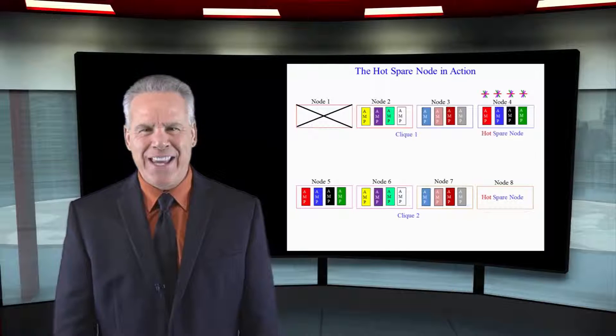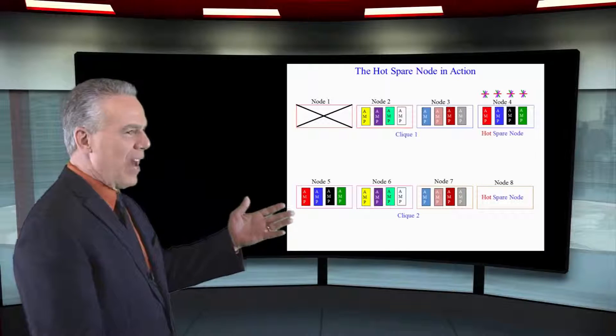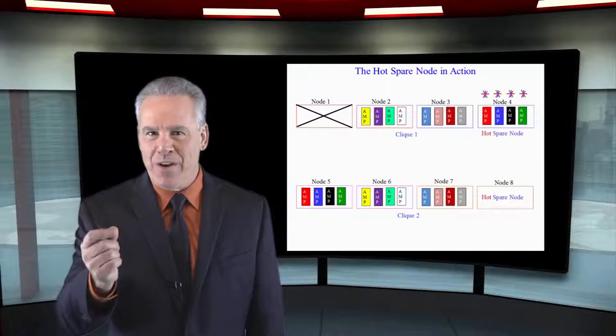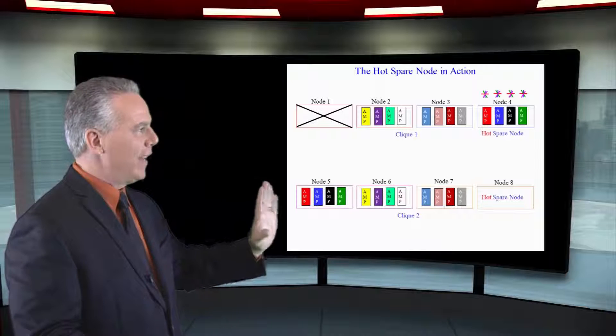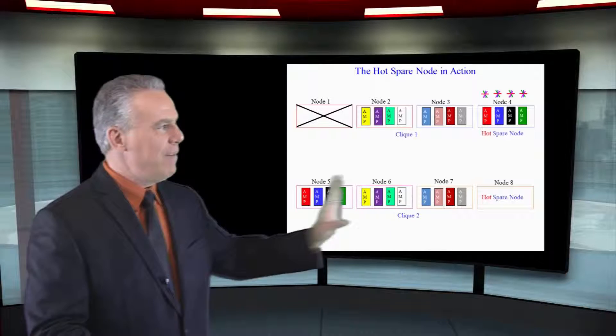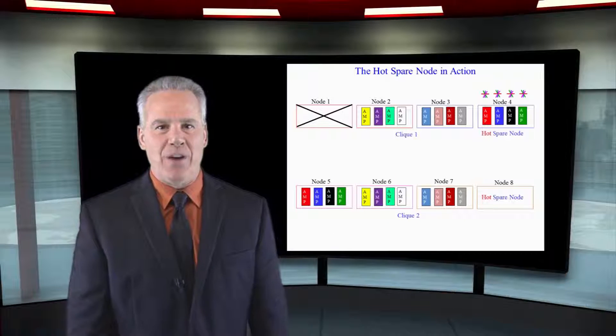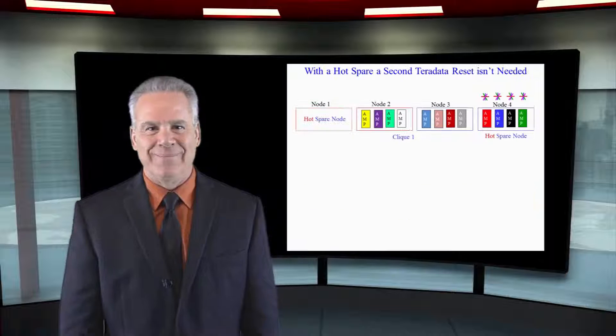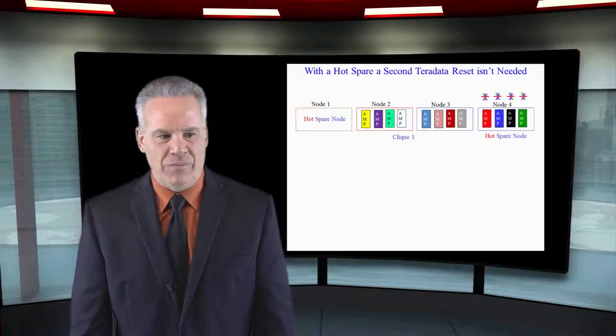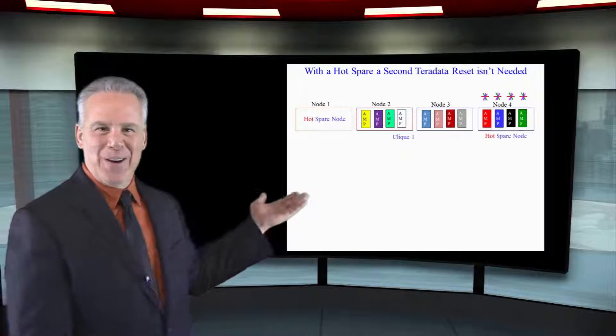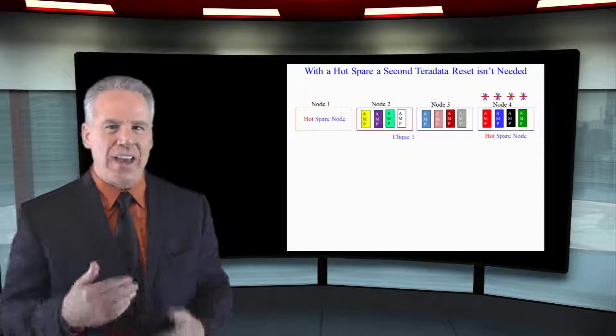Node one's down again. Node one, what the heck's going on back there? But we've got a spare node. And as you can see, all of the amps that are in node one have left the building and they've migrated to the spare node. And that's what it's for. When they get node one fixed and ready to go, that's now the new spare node. Very clever in how that works.